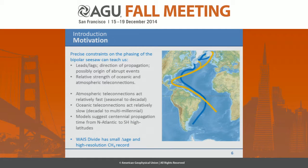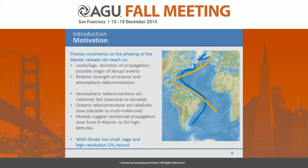Atmospheric teleconnections typically act on short time scales — seasonal to decadal scales — whereas oceanic processes related to the overturning circulation are probably much slower, operating on decadal to multi-millennial time scales.